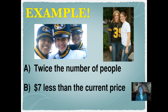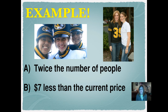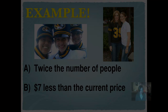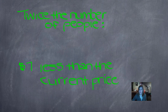Our first example — we're going to do two different ones because algebraic expressions can be very different if they are using different operations. So we're going to do both A and B. A is 'twice the number of people' — we're going to represent that using an expression. B is '$7 less than the current price.' One thing I want to make sure you understand is that an expression doesn't have an equal sign because we're not solving it. We're just representing what the problem is using numbers, symbols, and operations. When we're talking about twice the number of people, we use the term 'twice' to mean two times. So that tells us we're going to use the operation of multiplication.